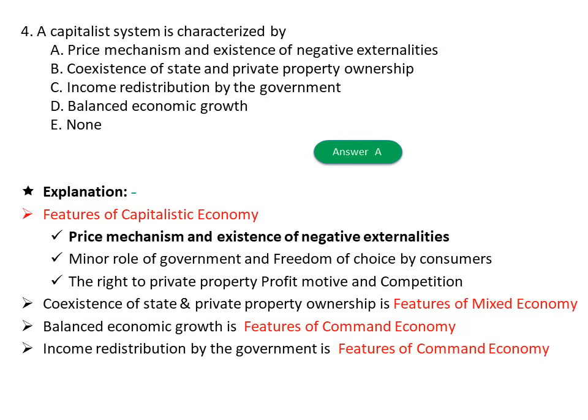Explanation: Features of a capitalist economy include the minimal role of government, freedom of choice by consumers, the right to private property, profit motive, and competition. Co-existence of state and private property ownership is a feature of a mixed economy. Balanced economic growth and income redistribution by government are features of a command economy. So the answer is A.